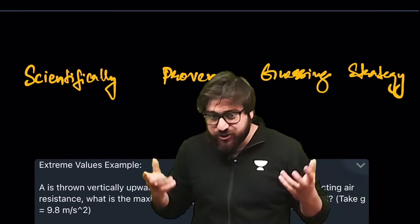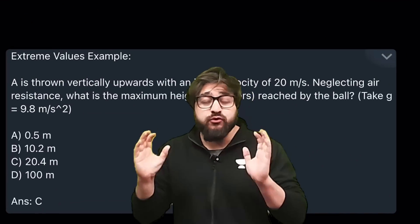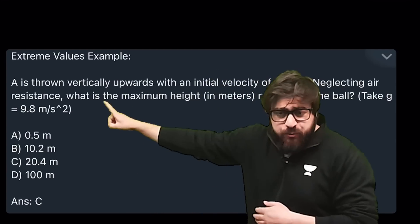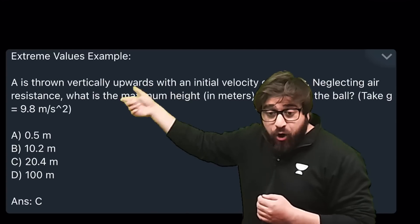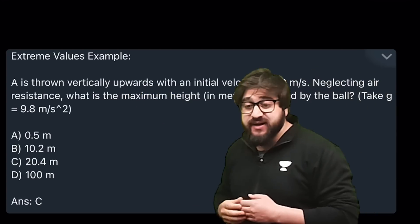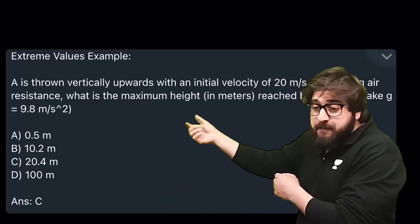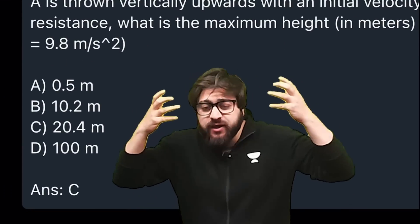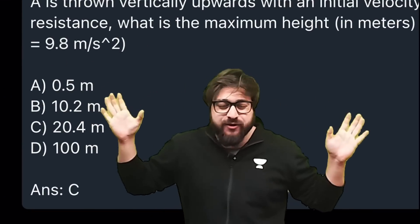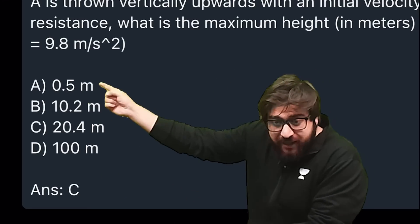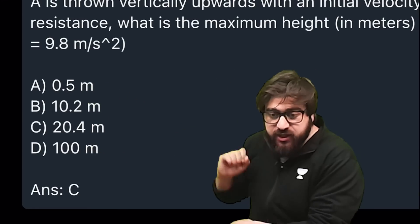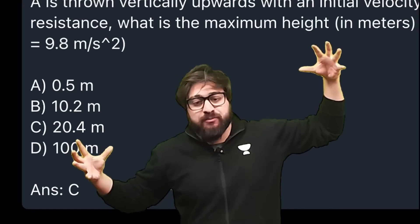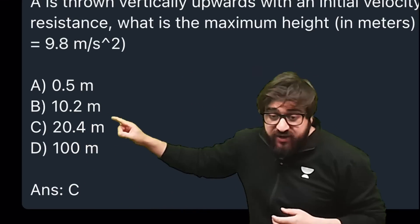The first scientifically proven guessing strategy is the Extreme Values method. If you get a question like this — for example, 'A ball is thrown vertically upwards with an initial velocity of 20 m/s; neglecting air resistance, what is the maximum height reached?' — and you can't recall the formula, look at the options. Option A is 0.5 and option D is 100 — these are the extreme values, very far from each other.